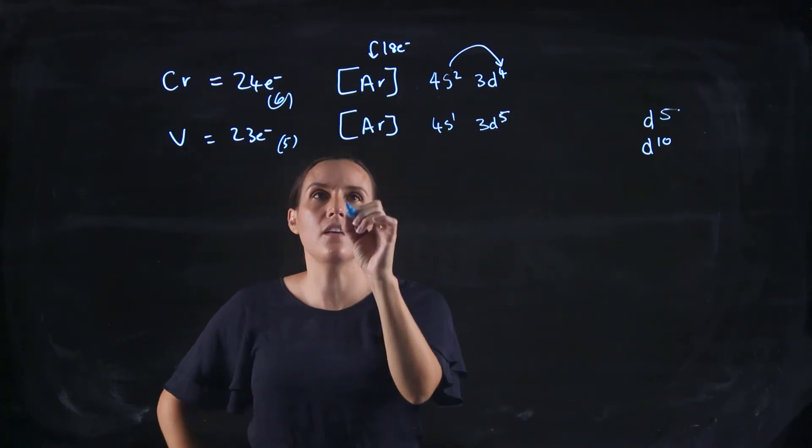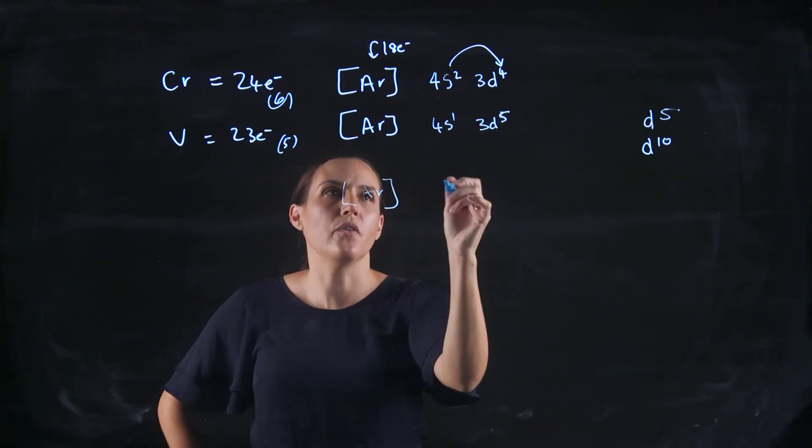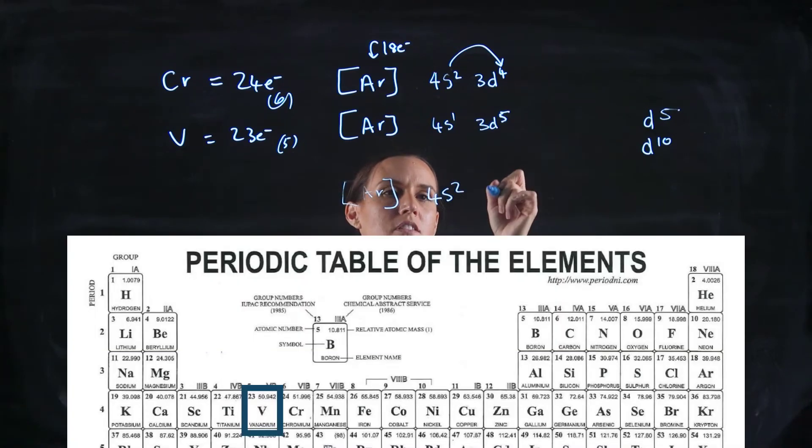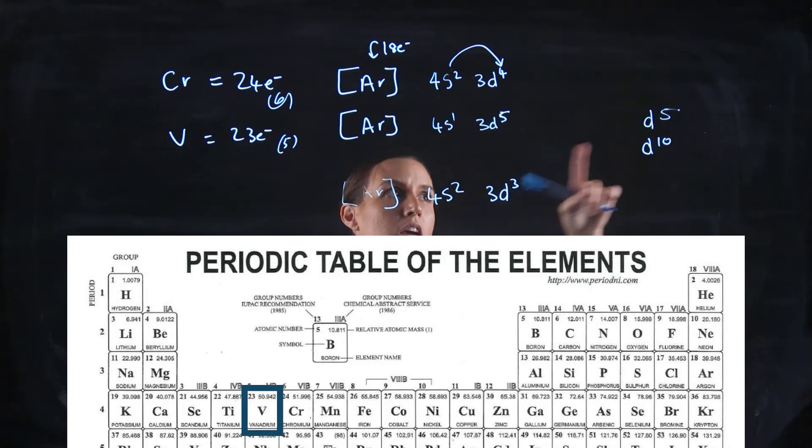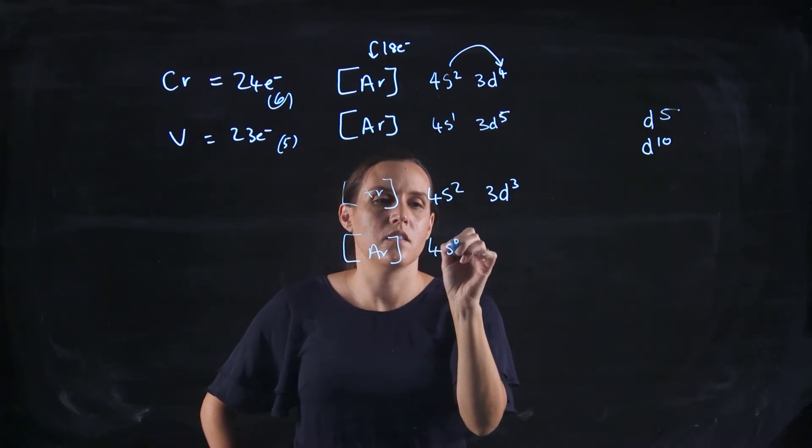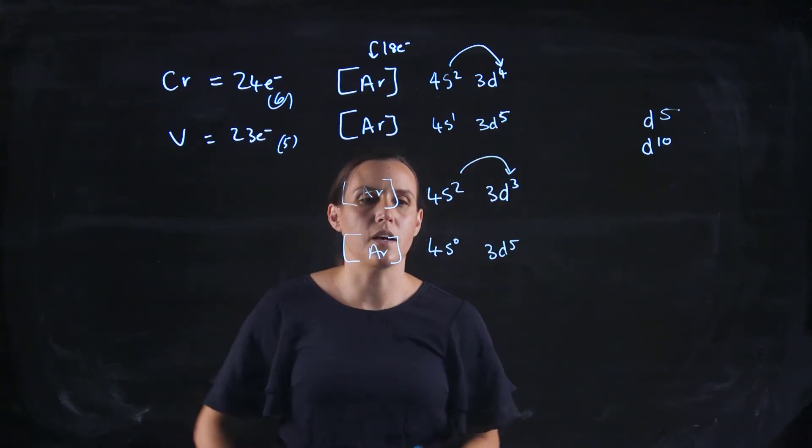So for vanadium, we've got the same. So we've got argon. We've got 4s2. And I'd need 5 more electrons, so it would be 3d3. So 3, 4, 5. Now you can see at 3 here, I could take 2 from here and reach that magic number of 5. So that's what the answer would be, promoting those ones up.